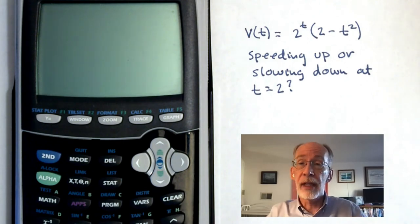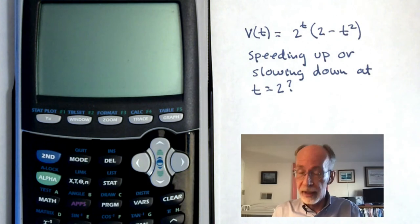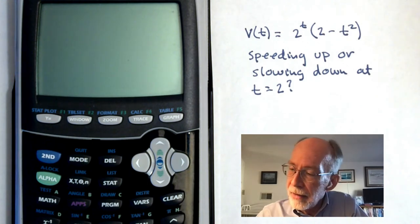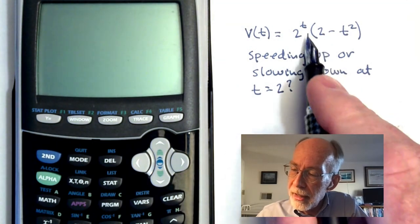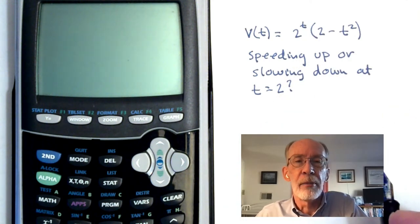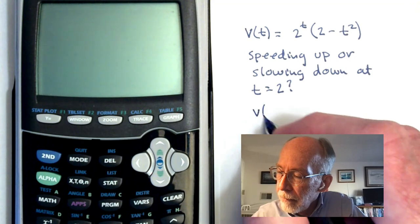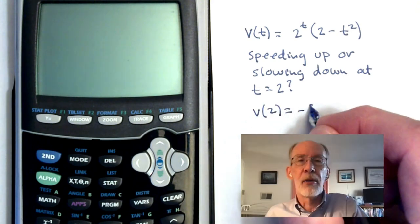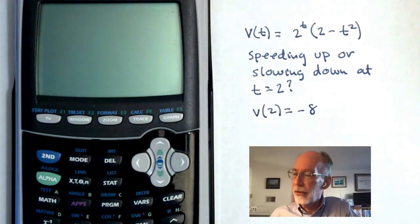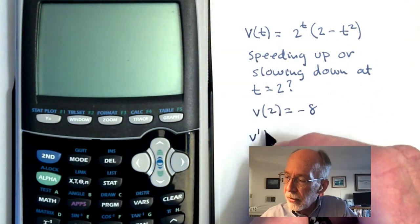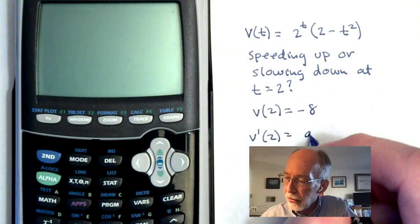So the velocity at time 2 is easily arrived at by inspection. If we plug a 2 in for t in the two locations where it appears, we're going to get negative 8. So then the question now becomes what is v'(2) or if you like a(2) for acceleration.